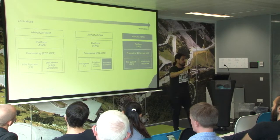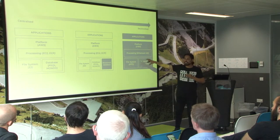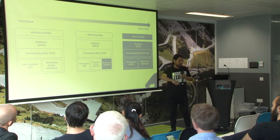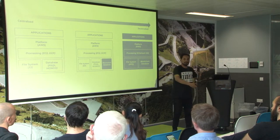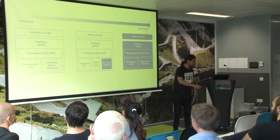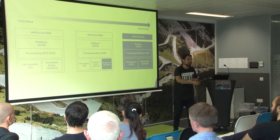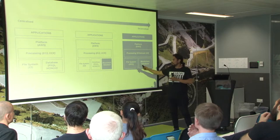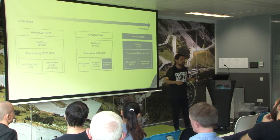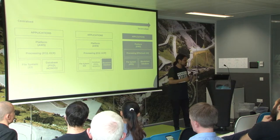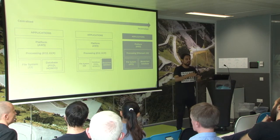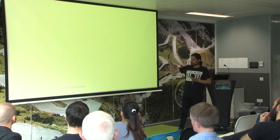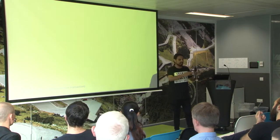The front end is going to be the same — mobile apps, web apps. What changes is what goes on underneath. Platform would be Ethereum — that's where you put up your application where everything happens. Processing on the Ethereum Virtual Machine: you use your Ethereum tokens to deploy your application onto the Ethereum platform. The file system is IPFS, a distributed file system. And at the bottom, the blockchain database.